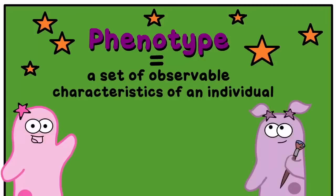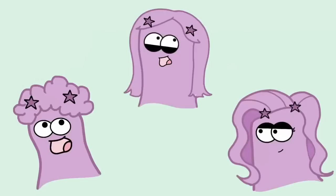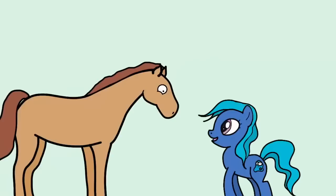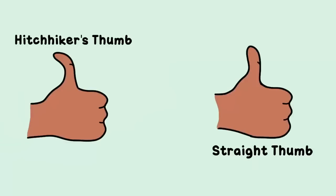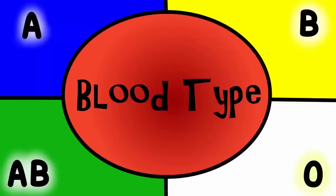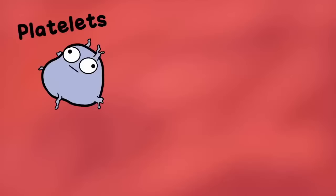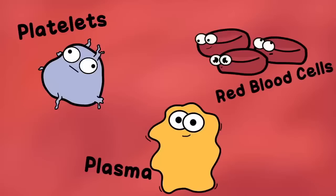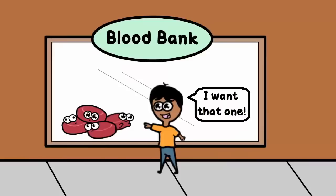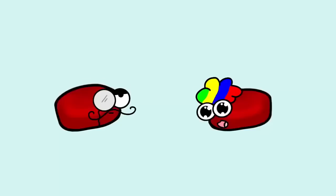There are a lot of phenotypes that are easy to tell: your eye color, your hair texture, your height, whether you have a straight thumb or hitchhiker thumb. But one phenotype that you can't tell just by looking is your blood type. Your blood is really made up of many things — platelets, plasma, red blood cells. You've probably heard before that when blood is donated, it's very important that it is matched correctly. And that's true because blood type phenotypes vary.